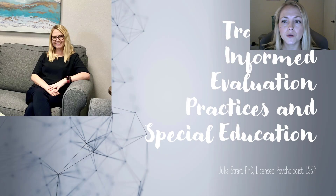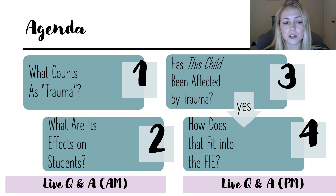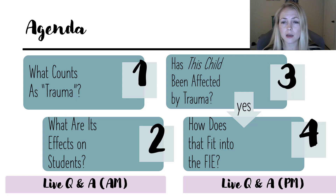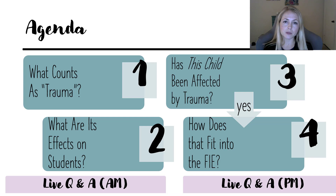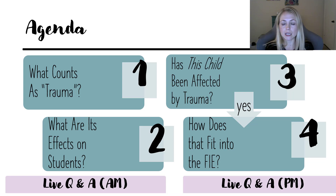We're at part four of four of trauma-informed evaluation practices in special education. If you've been sticking with us, you've seen how we've gone through four questions. The first was what counts as trauma. Then we talked about trauma's general effects on students — their brain, body, and behavior. Then we moved to what about this child in front of me that I'm evaluating — have they been affected by trauma? We looked at how to assess impact on educational behavior performance, and how to assess symptoms and exposure that are trauma-specific, both with COVID and non-COVID cases.